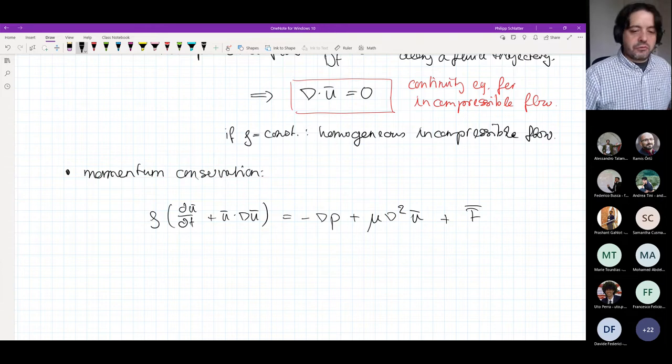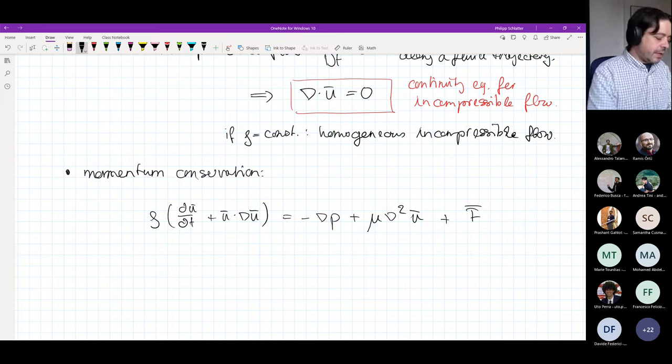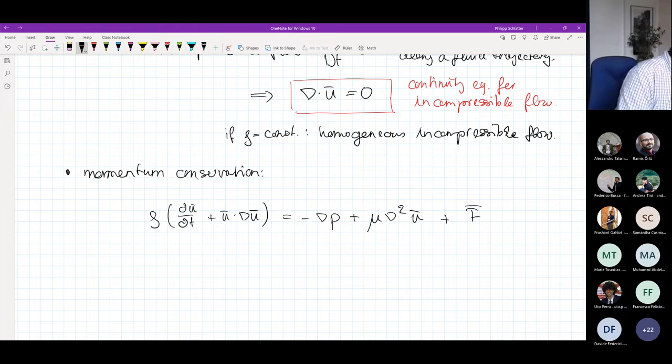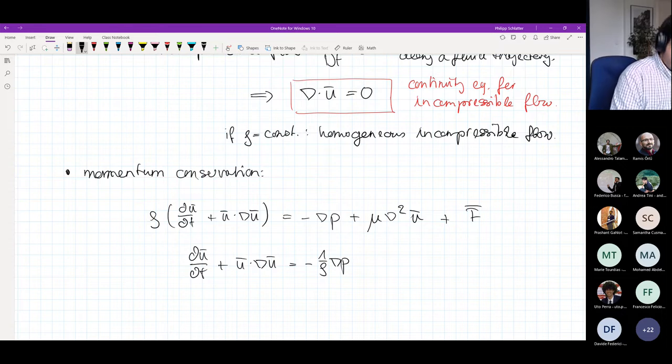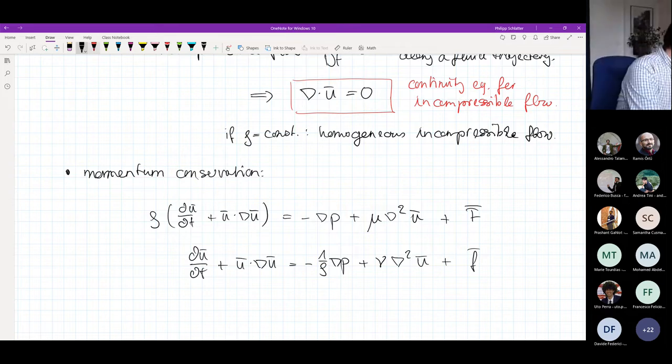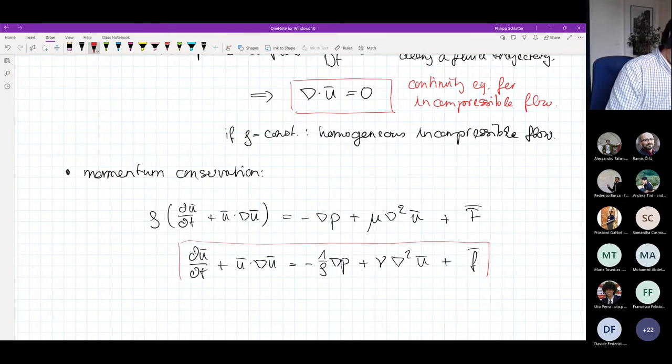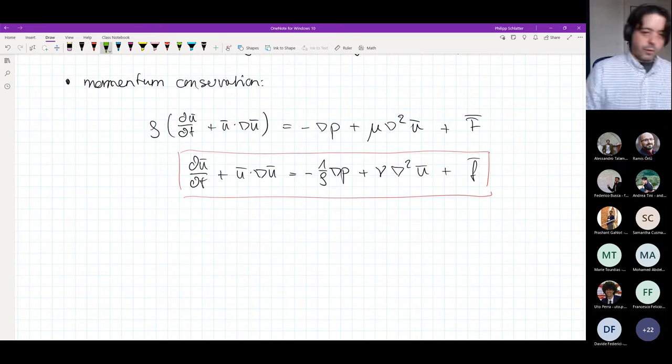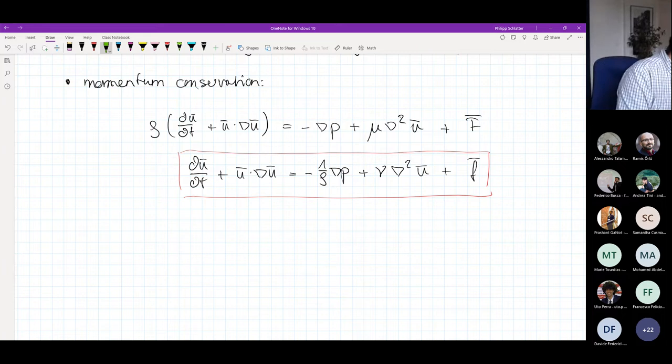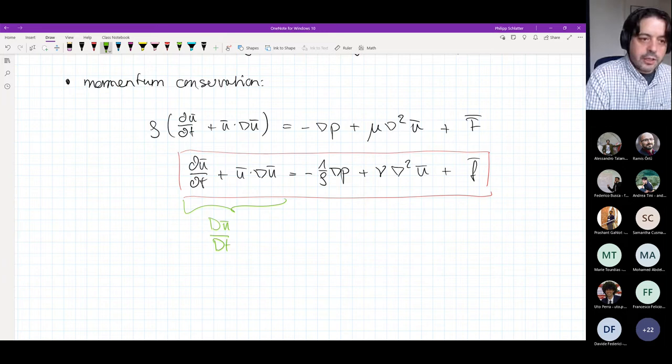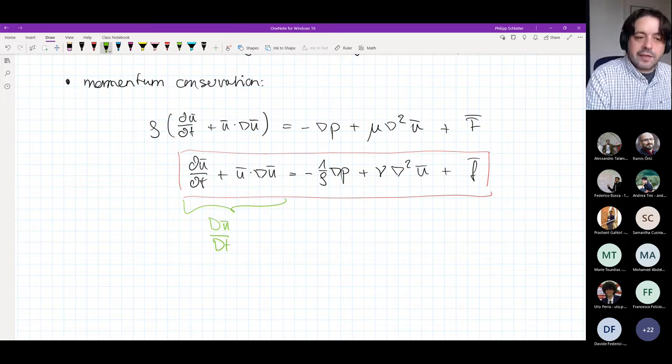You can change it a little bit in a more familiar formulation by dividing the whole equation by rho. What we get is du dt plus u times Nabla u equals minus one over rho grad P plus nu times Nabla squared u plus F. This is the way that we write it, usually when we start our analysis. It could be important to discuss a little bit what the different terms mean.